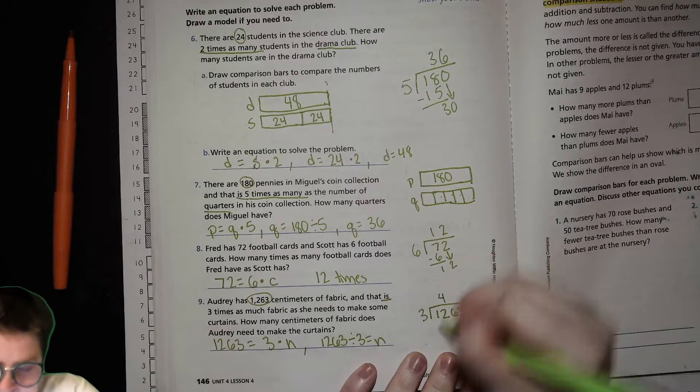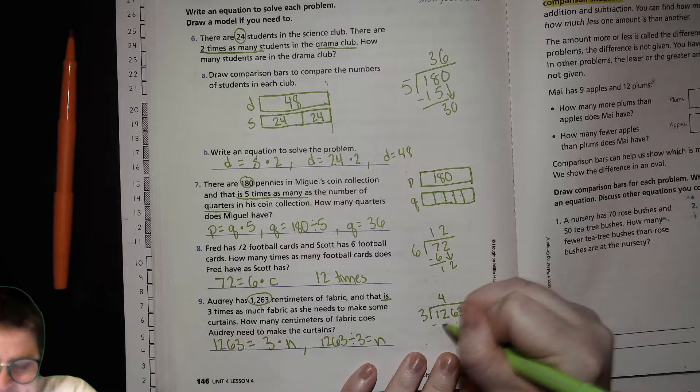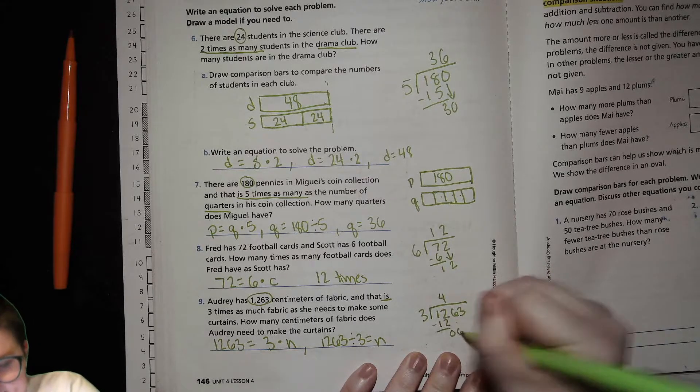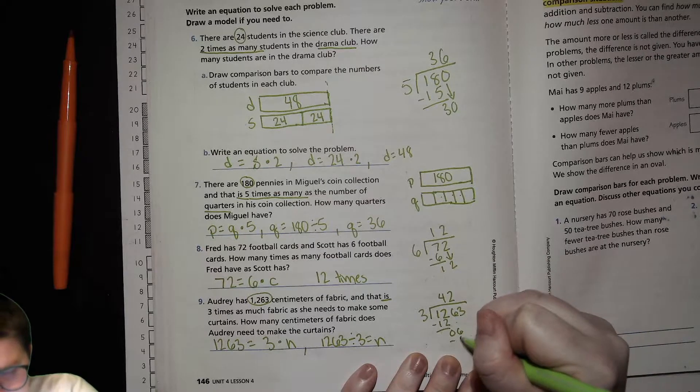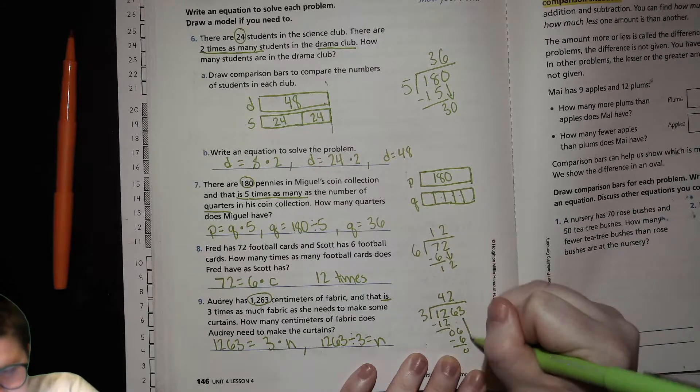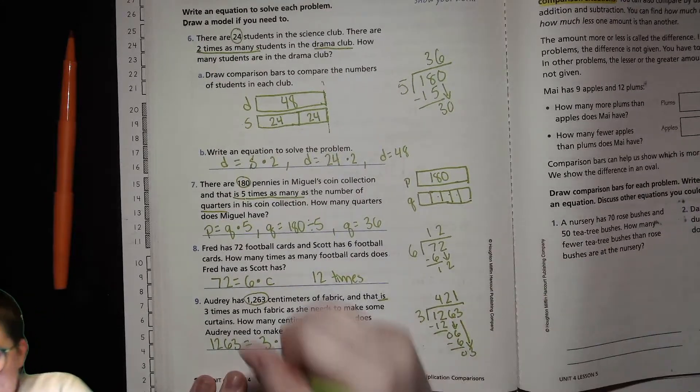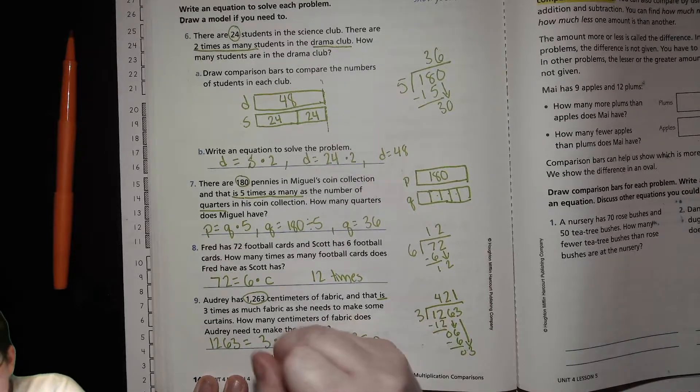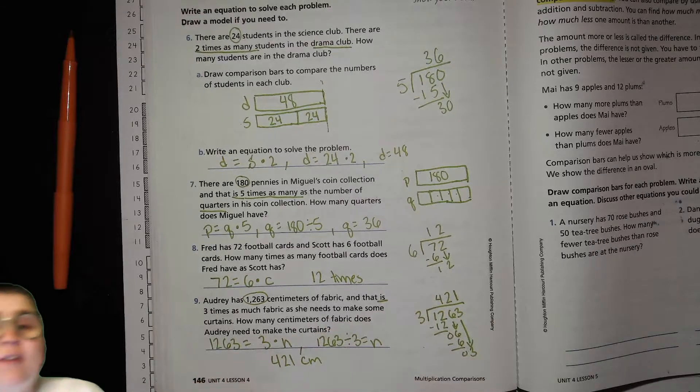Three goes into 12 four times. Correct. 12, zero. Bring that six down. Three goes into six two times. You get six, zero. Three goes into three one time. So she needs 421 centimeters of that fabric.